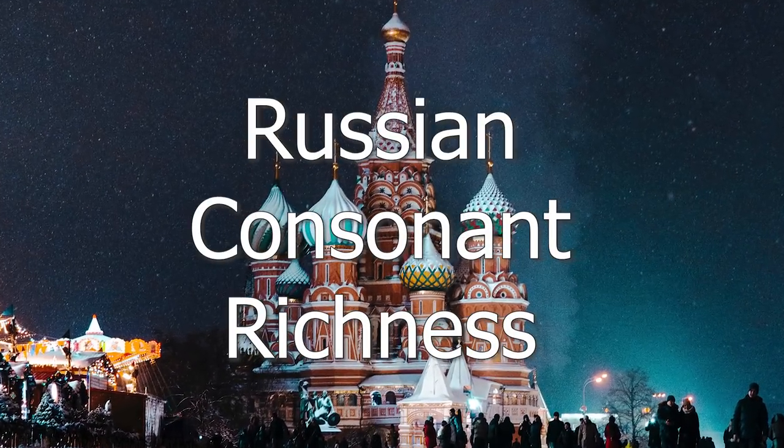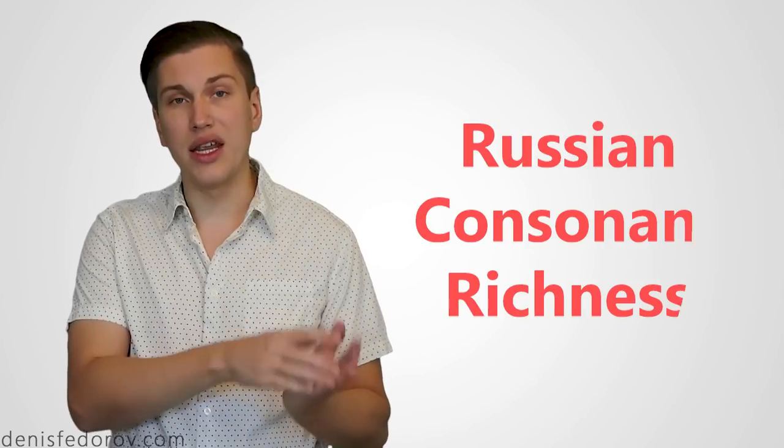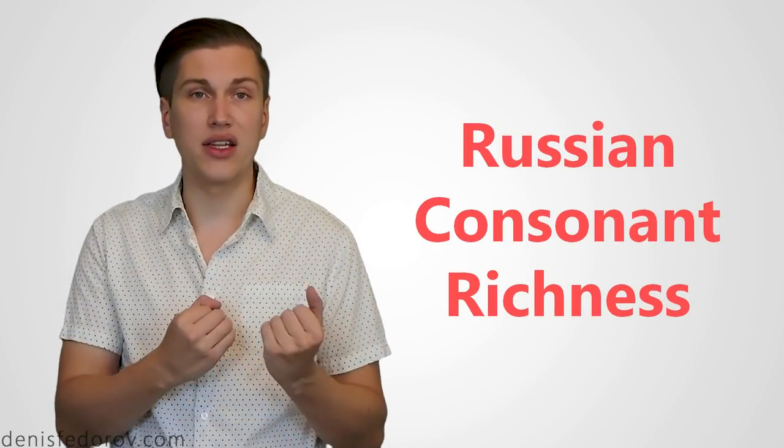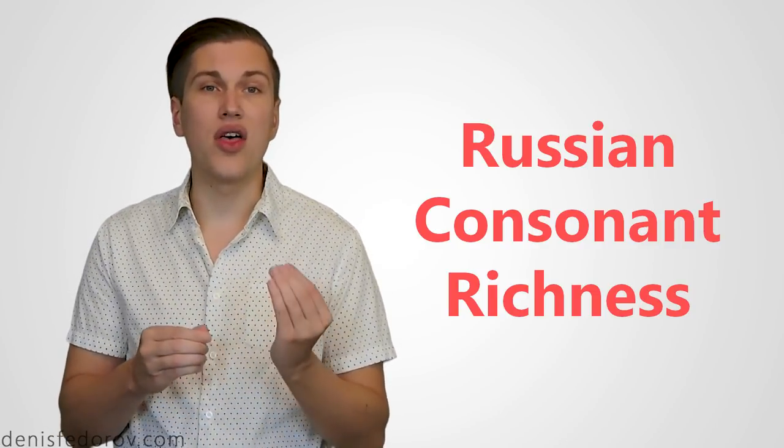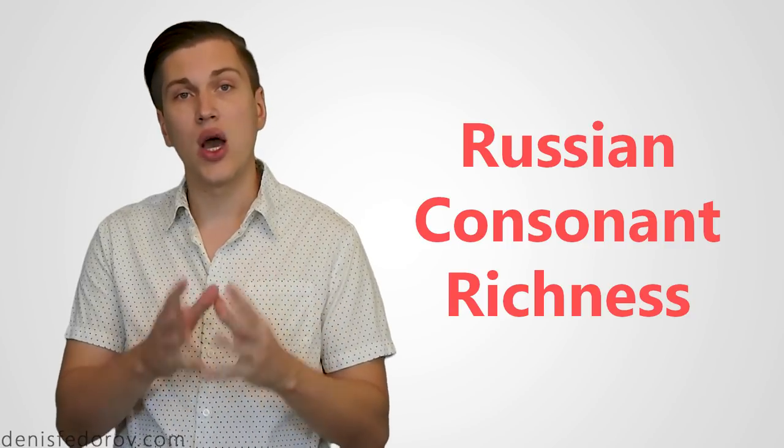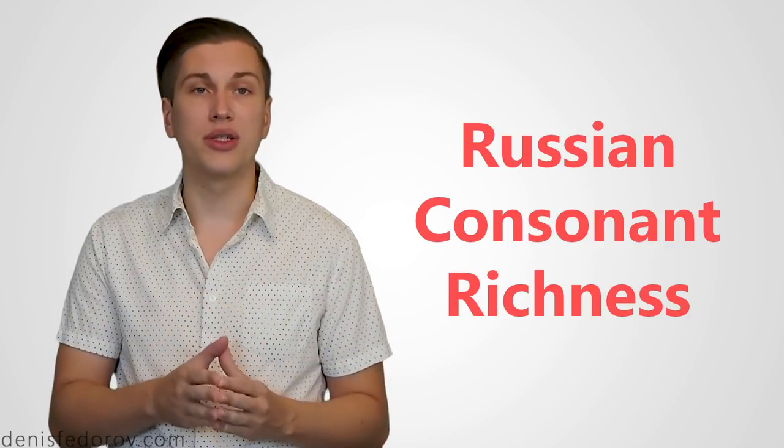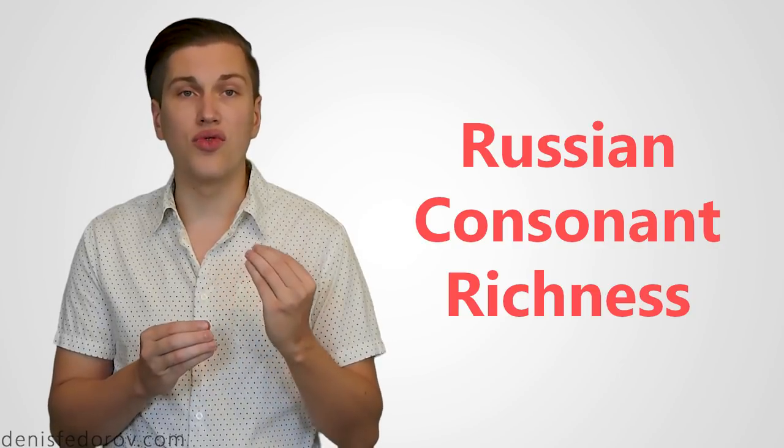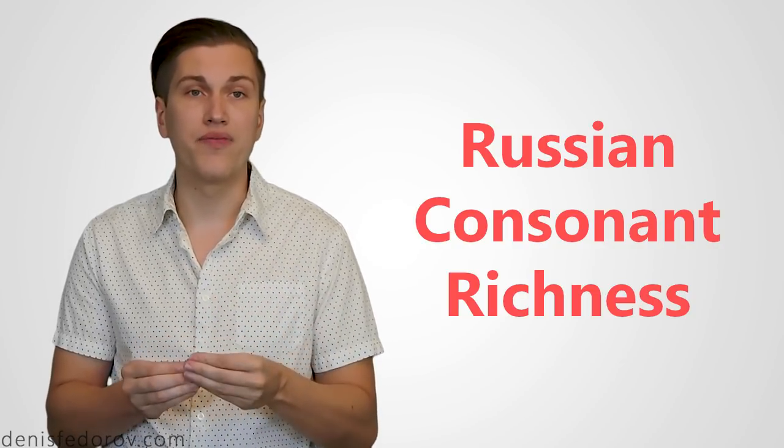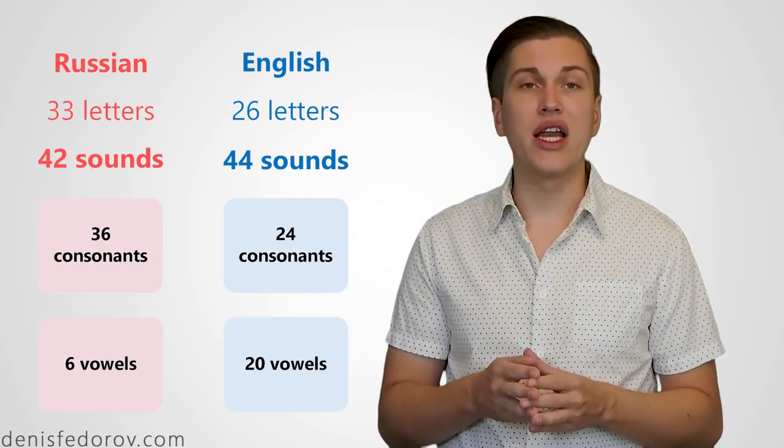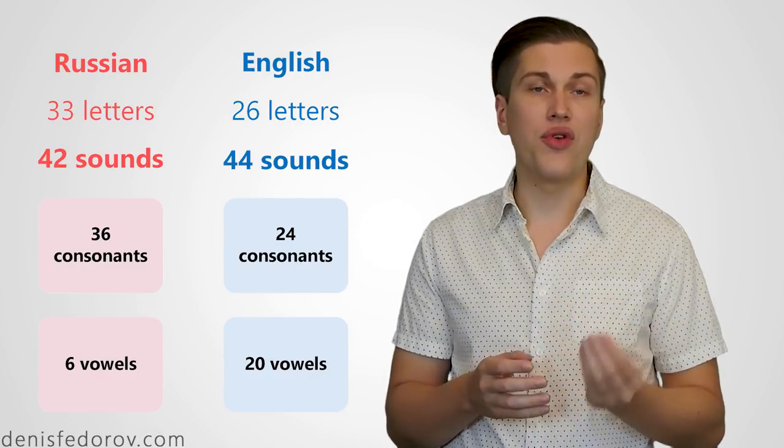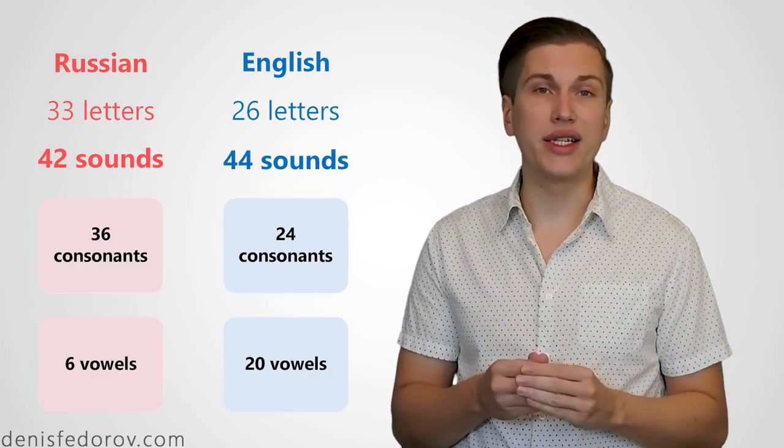The second difference will be quite opposite to the first, and that will be Russian consonant richness. You see that irony—before it was an English vowel richness which makes it hard for us Russian speakers to pronounce things properly in English, and now it is this Russian consonant richness which makes it hard for English speakers to pronounce things in Russian in a near native speaker manner. Here is the deal. In Russian there are 42 sounds and 33 letters. In English there are 44 sounds and 26 letters.